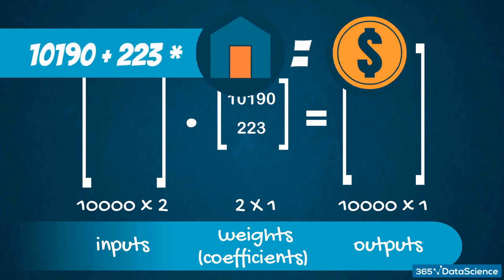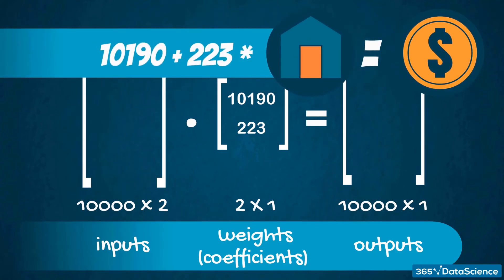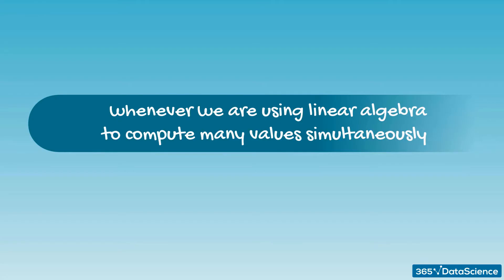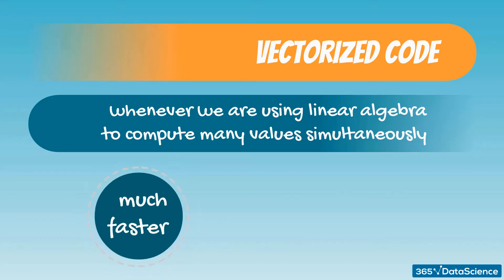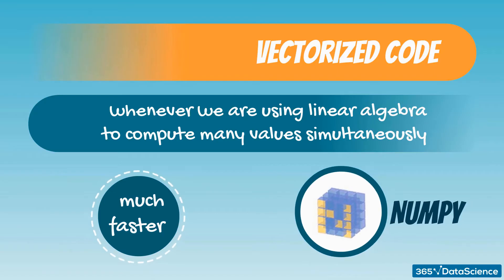Moreover, the equation doesn't change, as it only contained the two coefficients, 10,190 and 223. So, whenever we are using linear algebra to compute many values simultaneously, we call this array programming or vectorizing code. It is important to stress that array programming is much, much faster. There are libraries such as NumPy that are optimized for performing this kind of operations, which greatly increases the computational efficiency of our code.